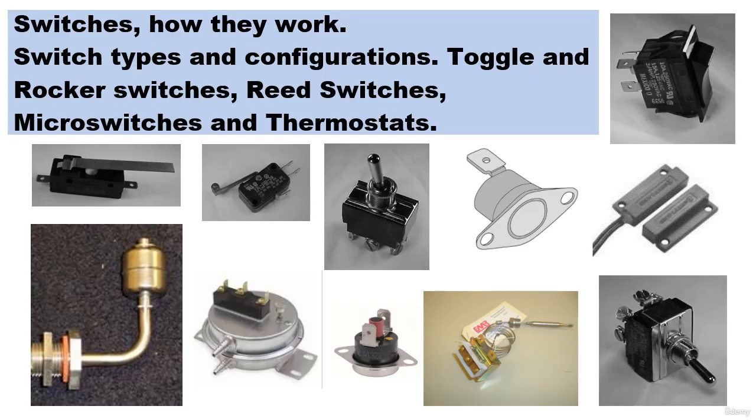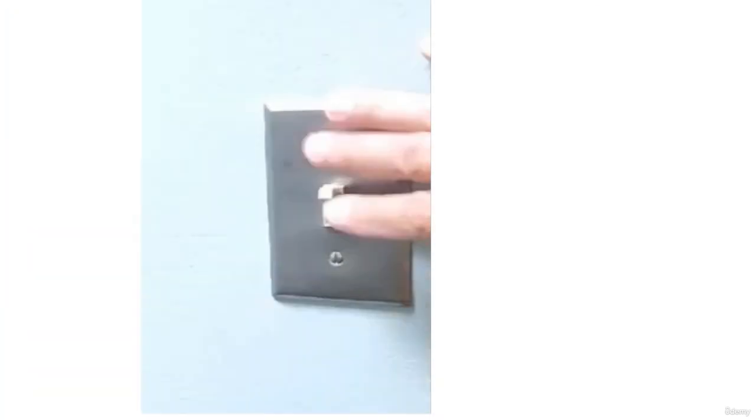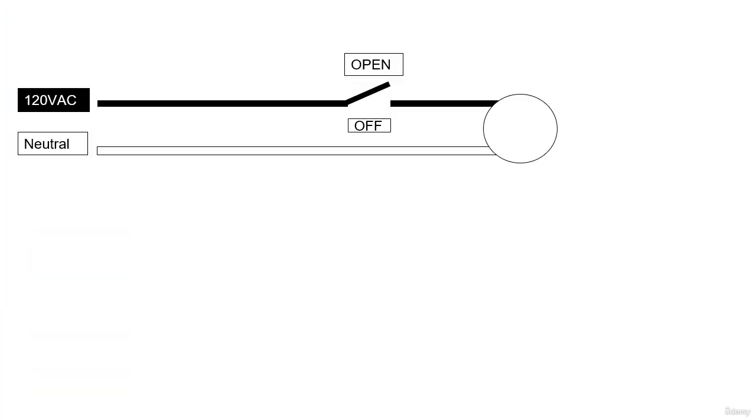Let's talk about some simple electrical components. Switches. A switch is a device that simply connects or closes a circuit to allow electrons to flow, creating current flow.